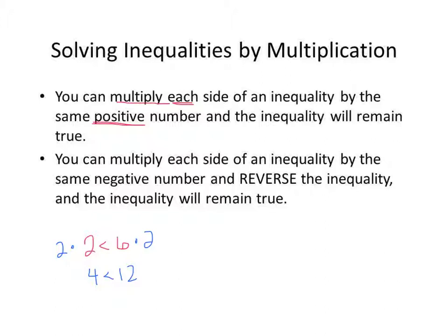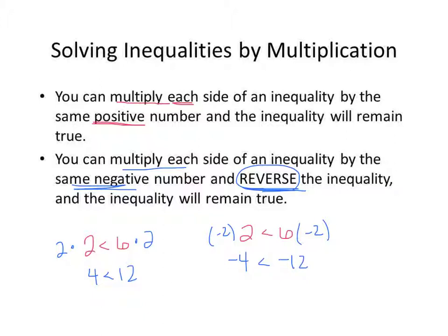For the second property, you can multiply each side of an inequality by the same negative number if you reverse the inequality — that's the key thing. So if we have 2 is less than 6 and multiply each side by negative 2, we get negative 4 is less than negative 12. But negative 4 is not less than negative 12 — negative 4 is greater than negative 12. So for this inequality to remain true, we must reverse our inequality. If you multiply by a negative, reverse your inequality.